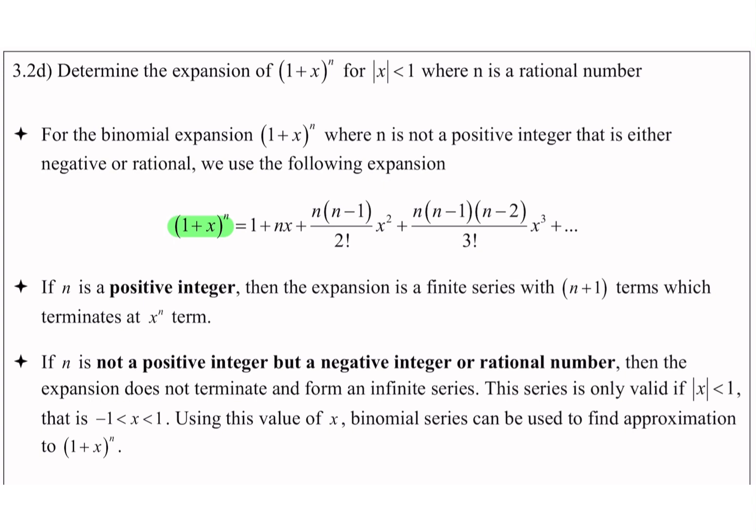If n is a positive integer, then the expansion is a finite series with n+1 terms which terminates at the x^n term. Ini macam saya cakap tadi, kalau dia positive integer, expansion tu adalah finite series — dia akan dapat n+1 term. Kalau power dia 2, maksudnya saya akan dapat 3 term. Kalau power dia 5, saya akan dapat 6 term. Tapi kalau dia bukan positive integer — if n is not a positive integer but a negative integer or rational number — then the expansion does not terminate and forms an infinite series.